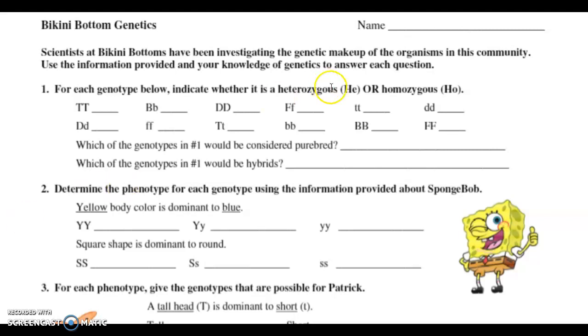If it's heterozygous, we're going to write HE. If it's homozygous, we're going to write HO. Remember, hetero means different, so that means we're going to have different alleles. It's going to have a dominant allele and a recessive allele for whatever the trait might be.